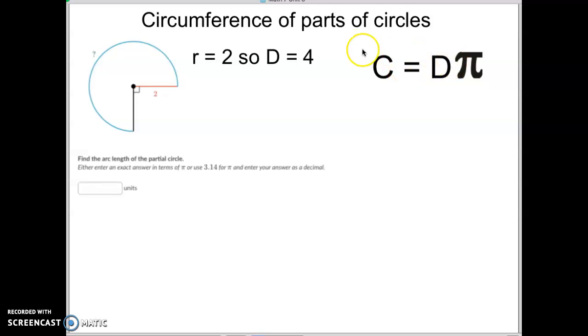So then as we plug into our formula on this one, then we just plug in circumference equals pi times the diameter, which is here's our diameter of 4 and pi. But notice this is not a full complete circle. It's not one full complete circle. It's a part of a circle.